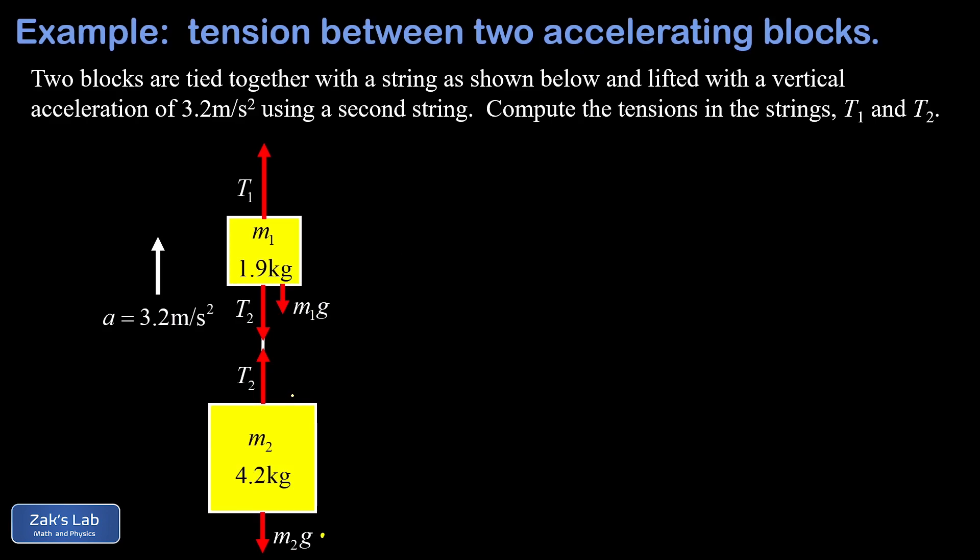The string between the two blocks had a tension of T2, but strings pull at both ends. So that string is pulling upward on m2 with tension T2, but also downward on m1 with tension T2. There's a second force downward on m1, the weight of m1, given by m1 g. Finally, T1 is the tension of that upper string pulling upward on m1.